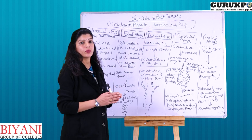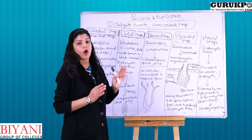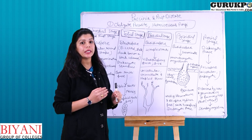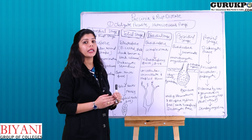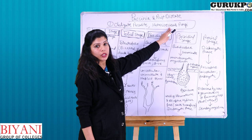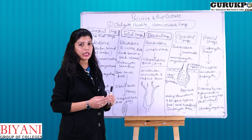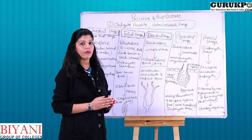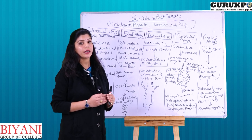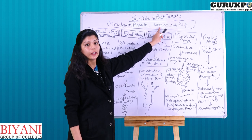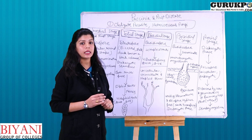Puccinia graminis is an obligate parasite, which means its life cycle is completed only on a particular host plant. If it is not on the host plant, it cannot complete its life cycle. Second, this is a heteroecious fungi, which means Puccinia graminis needs two host plants to complete its life cycle — the first host plant is wheat and the second is barberry. The opposite of heteroecious is autoecious fungi, which completes its life cycle on one host plant.